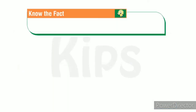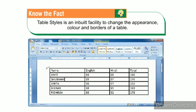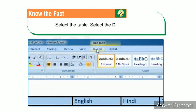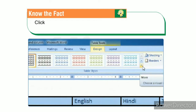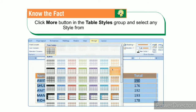Fact file: Table Styles is an inbuilt facility to change the appearance, colors, and borders of a table. Select the table, select the Design tab, click the More button in the Table Styles group, and select any style from the displayed gallery.